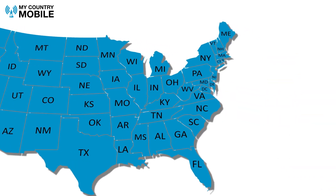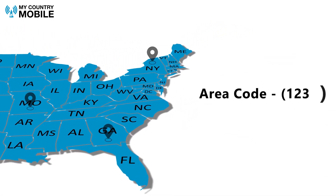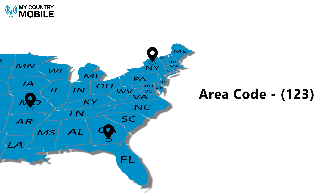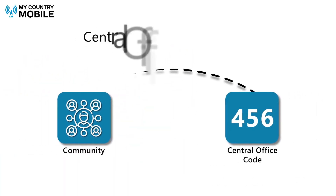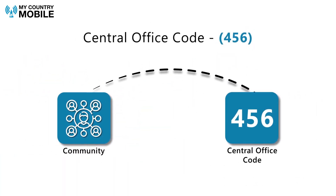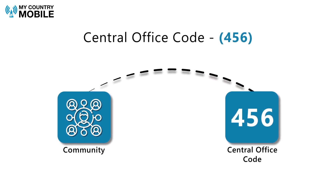The area code indicates a geographic region, such as 212 for Manhattan, New York. The central office code identifies a specific telephone exchange within the area, helping to route calls accurately.